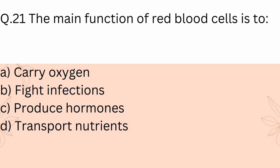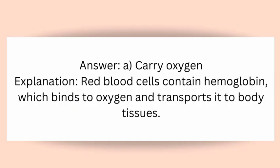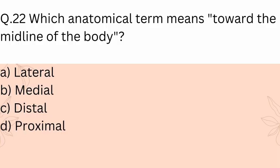Question 21: The main function of red blood cells is to? A) Carry oxygen, B) Fight infections, C) Produce hormones, D) Transport nutrients. Answer: A) Carry oxygen. Explanation: Red blood cells contain hemoglobin, which binds to oxygen and transports it to body tissues.